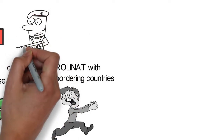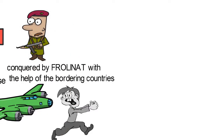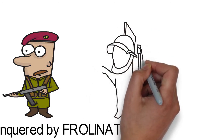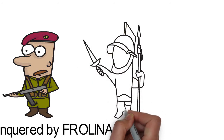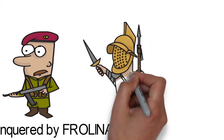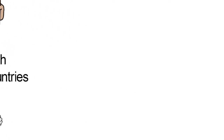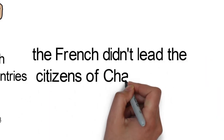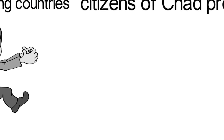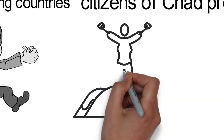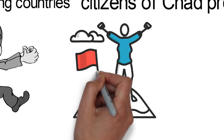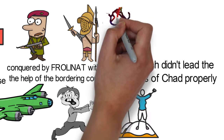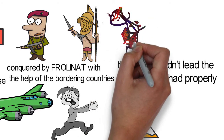France took interest in the Republic of Chad and attacked them in 1891. They took predominance and kicked against the Muslim kingdoms. A war occurred in 1900 between the French Major and the invader from Sudan, after which a governor general took over. During the colonial period, the French didn't lead the citizens of Chad properly. Though they had predominance over the southern part, they were not able to govern the other parts effectively. But in 1920, France conquered the territory and made it part of French Equatorial Africa.